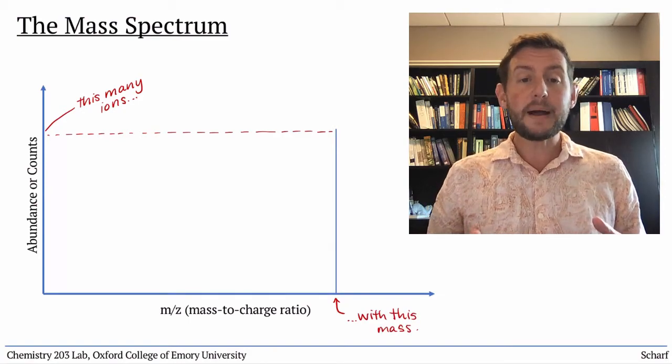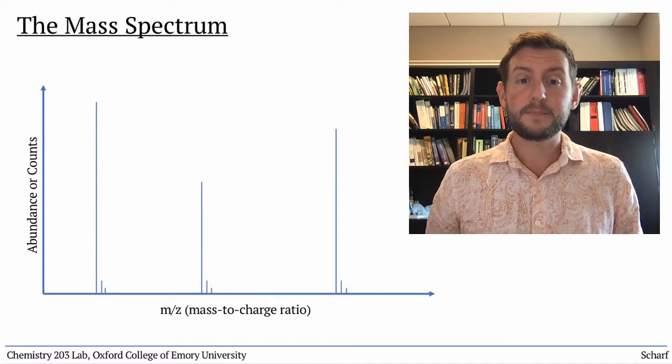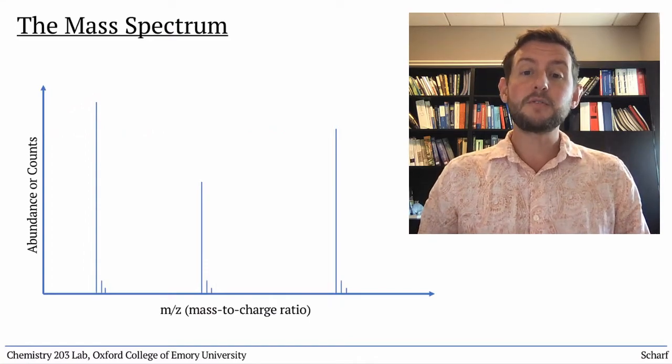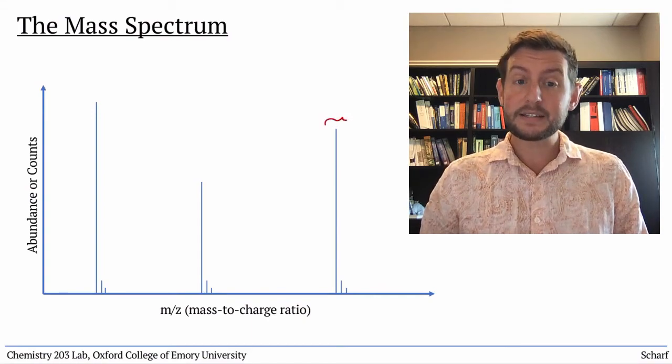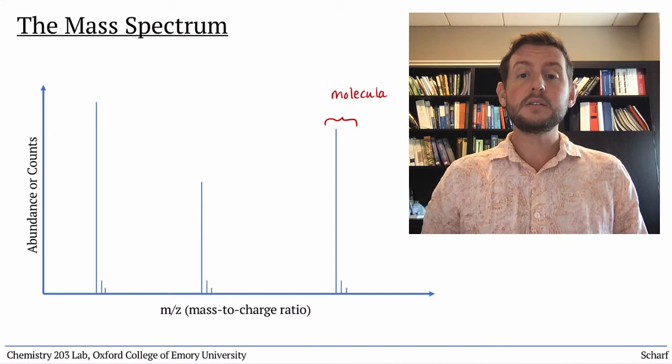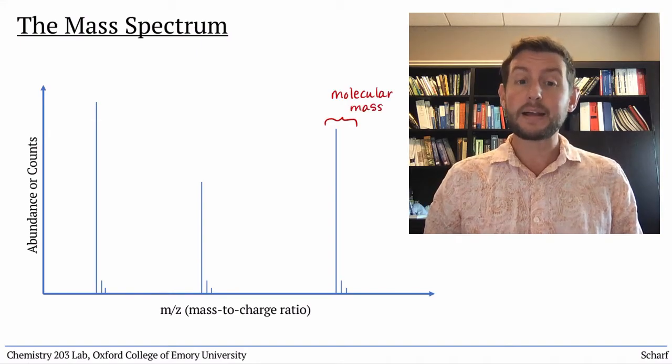A typical mass spectrum looks something like this. You'll often see several clusters of peaks. The cluster with the highest mass is the one we will always focus on. It's the one that tells us the molecular mass of the sample.